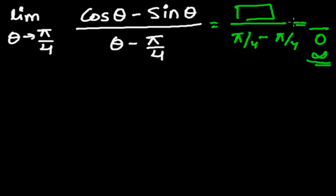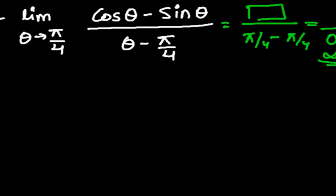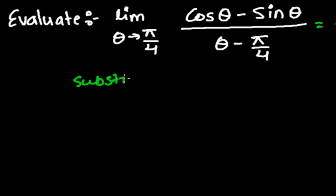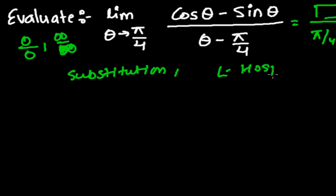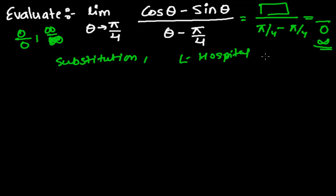So we cannot do it like this — we have to solve it differently. In this type of problem, we use the substitution method. Whenever we get a zero upon zero form, or infinity upon infinity form, we use the substitution method. Another option is L'Hôpital's rule, but we will not apply that here since we haven't learned derivatives yet.